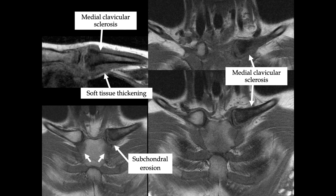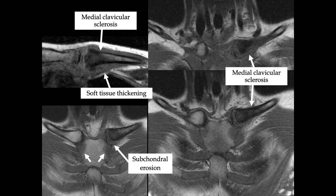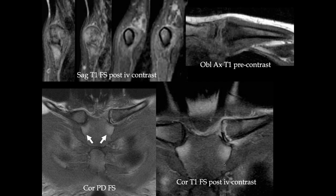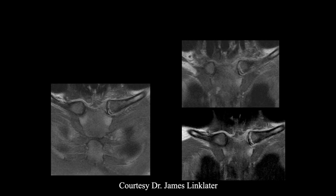We have some subchondral erosion and soft tissue thickening of the left clavicle. There's low signal throughout and some low signal within the sternum, with increased soft tissue thickening near the proximal left clavicle and some edema there. On post-contrast imaging, you see enhancement at the costochondral junctions and the sternoclavicular junction.